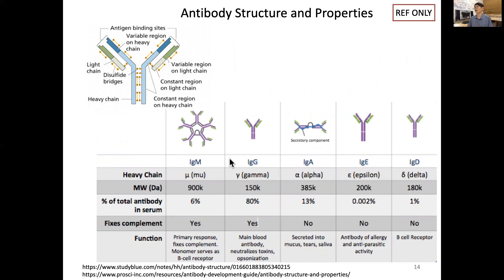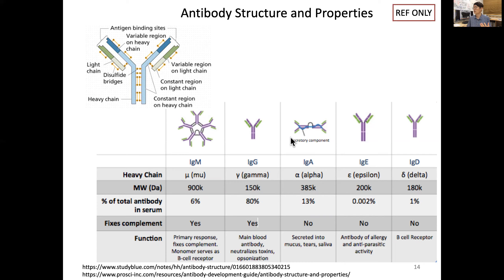For reference, the heavy and light chains are all connected by disulfide bonds. The different immunoglobulin classes — IgM, IgG, IgA, IgE, IgD — have different shapes and molecular weights. The smallest is IgG, which can pass through the placenta to the baby. In serum, IgG is the most abundant antibody — the main blood antibody — which neutralizes toxins and performs opsonization for easy uptake by phagocytosis. IgA is secreted into mucus, tears, and saliva, and IgE is the allergy-related antibody.